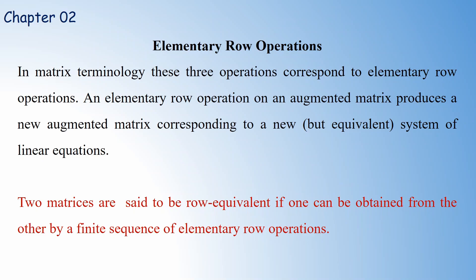If you start with one matrix and apply a sequence of row operations to this matrix, you can obtain a new matrix. We call these two matrices row equivalent matrices, because one matrix can be obtained by applying a set of row operations to the first matrix.